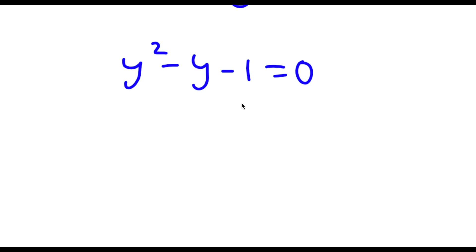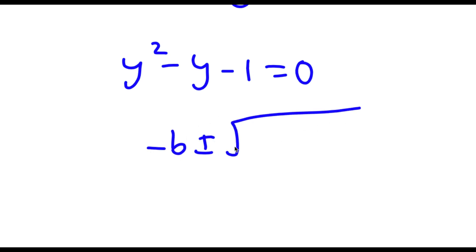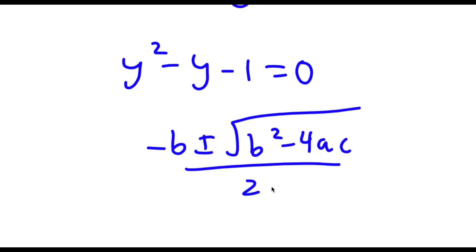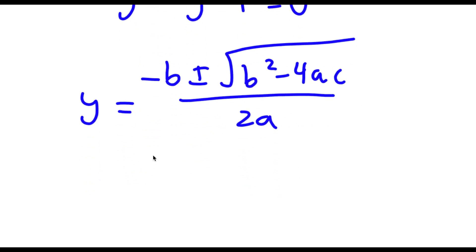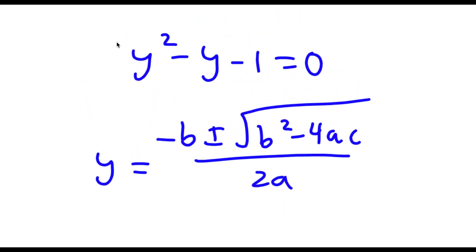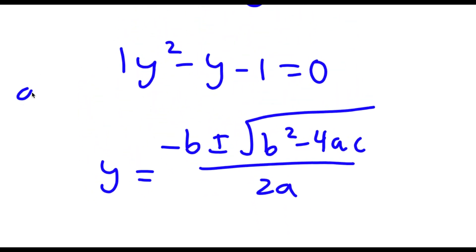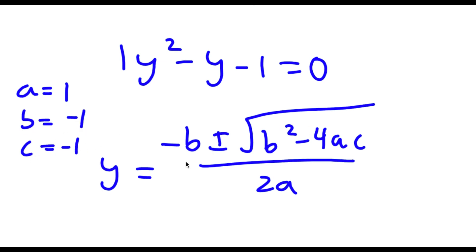To solve this, I'm going to use the quadratic formula, which is negative b plus or minus the square root of b squared minus 4ac, all over 2a. In this case, a is equal to 1, b is equal to negative 1, and c is equal to negative 1.